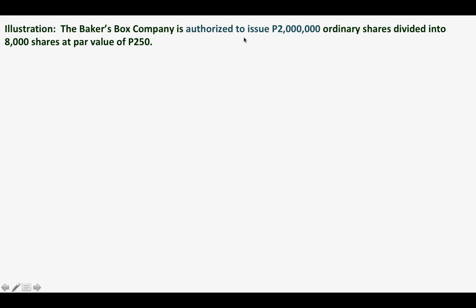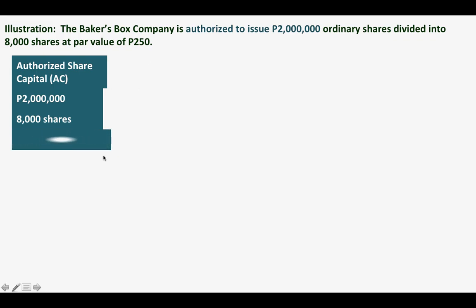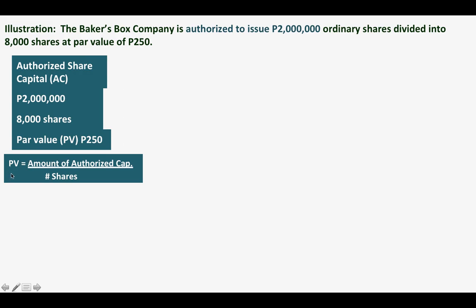The Baker's Box Company is authorized to issue 2 million ordinary shares divided into 8,000 shares at a par value of 250. Here we have authorized share capital — we will use AC as the abbreviation. The authorized amount is 2 million. This 2 million is divided into 8,000 shares, so 2 million divided by 8,000 shares gives a par value of 250. If the par value is not given, you can compute it by dividing the amount of authorized capital by the number of shares.